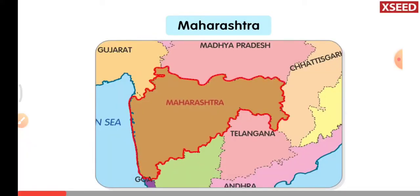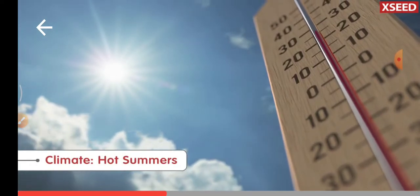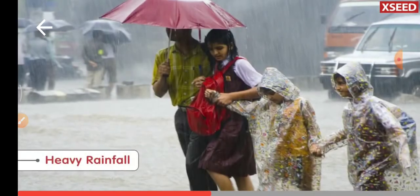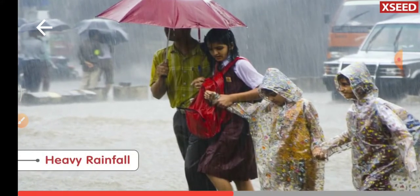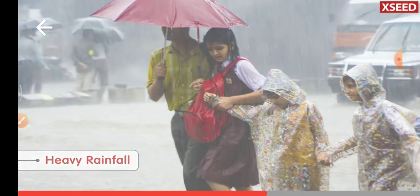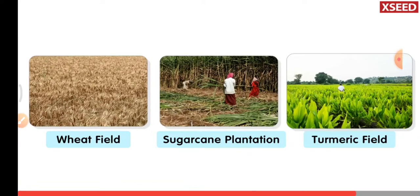Maharashtra lies in the plateau region and along the coastal plains of India. The climate is hot and humid. Some parts receive heavy rainfall. The climate and landform are suitable to grow wheat, sugarcane, and turmeric.